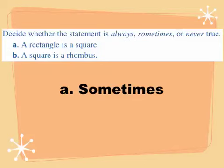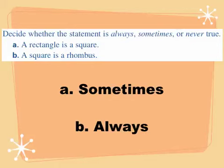Part B: a square is always a rhombus. The definition of a square requires four congruent sides, and a rhombus also requires four congruent sides. So a square is always a rhombus — this is always going to be true.